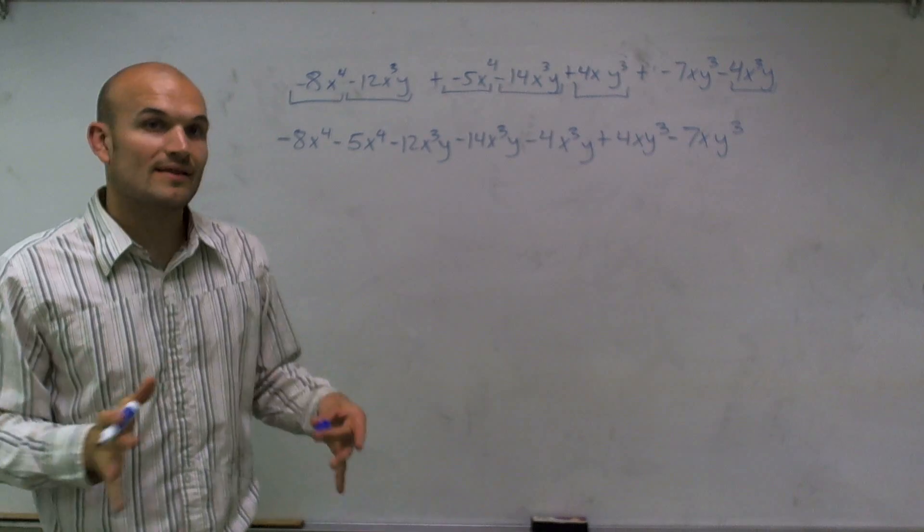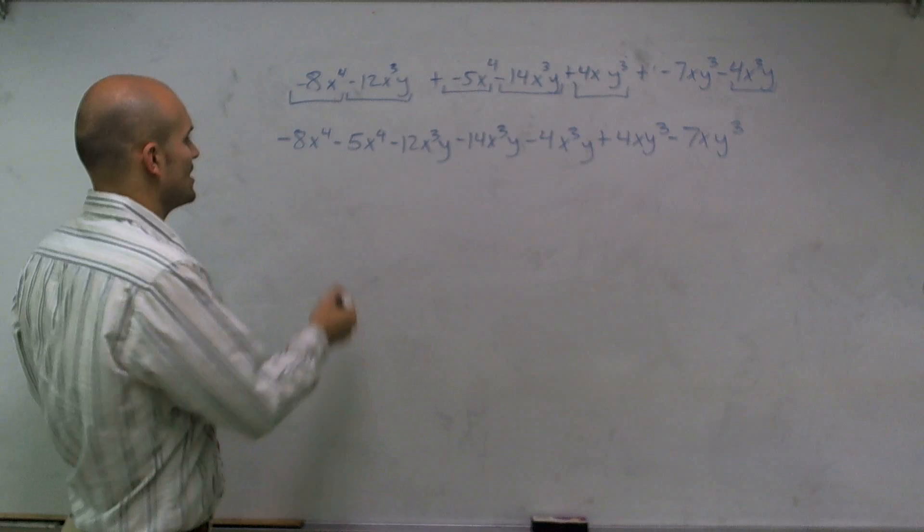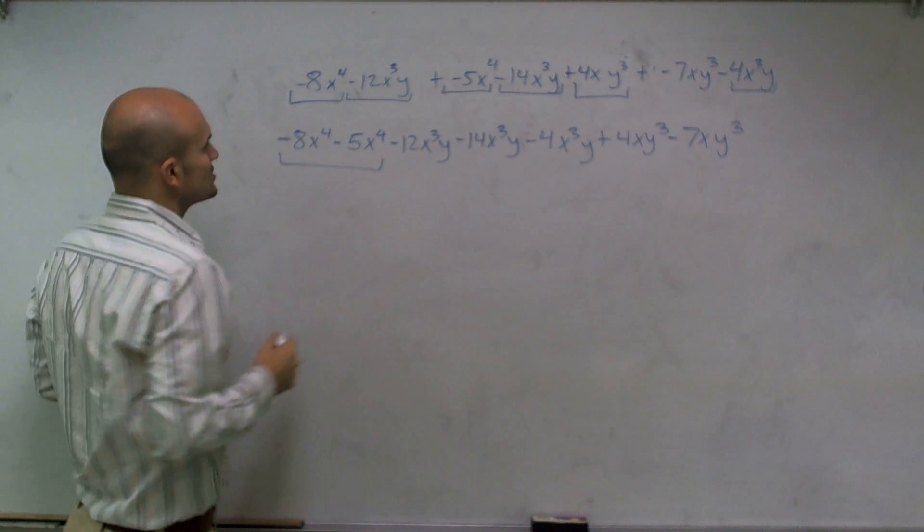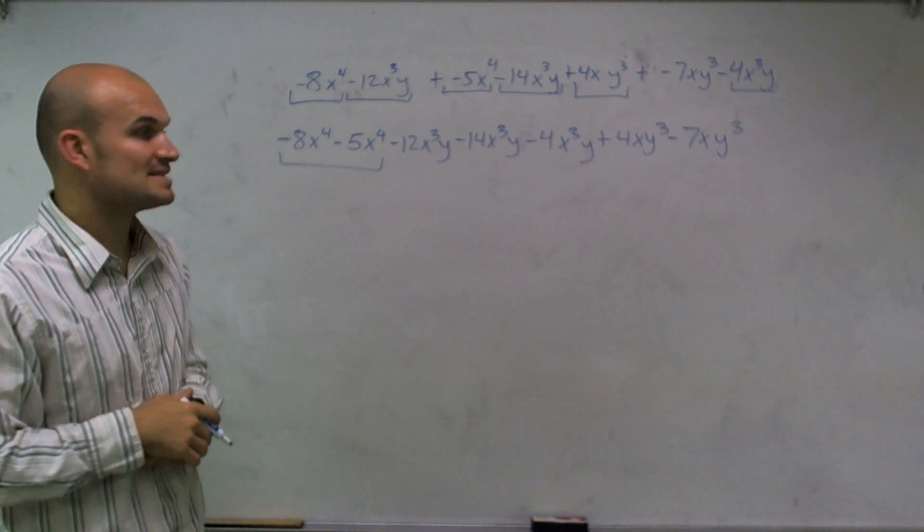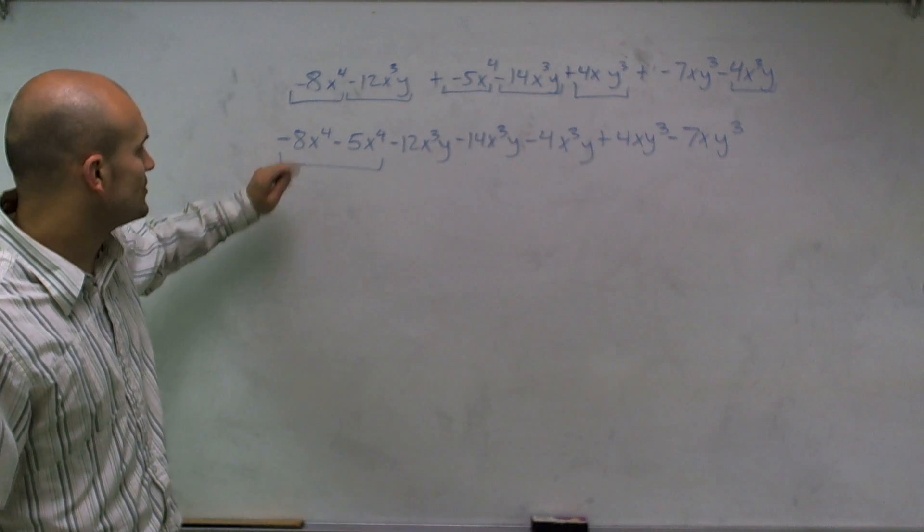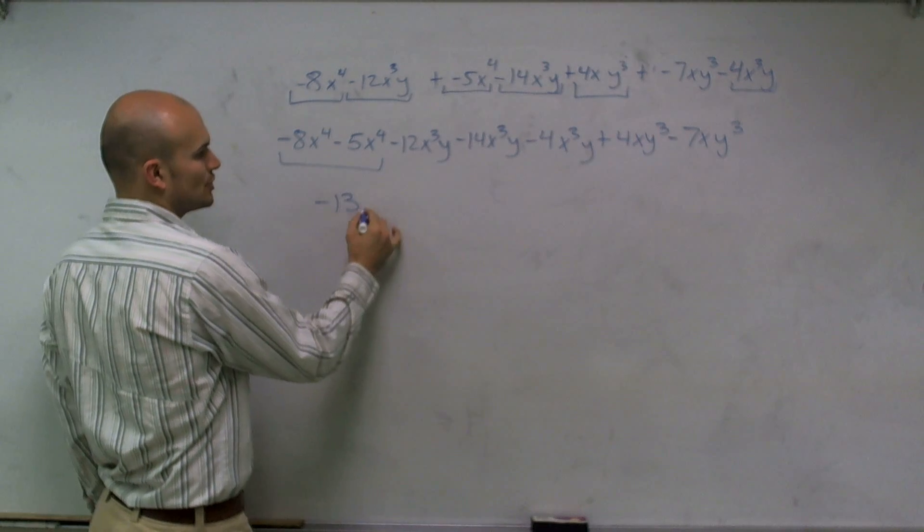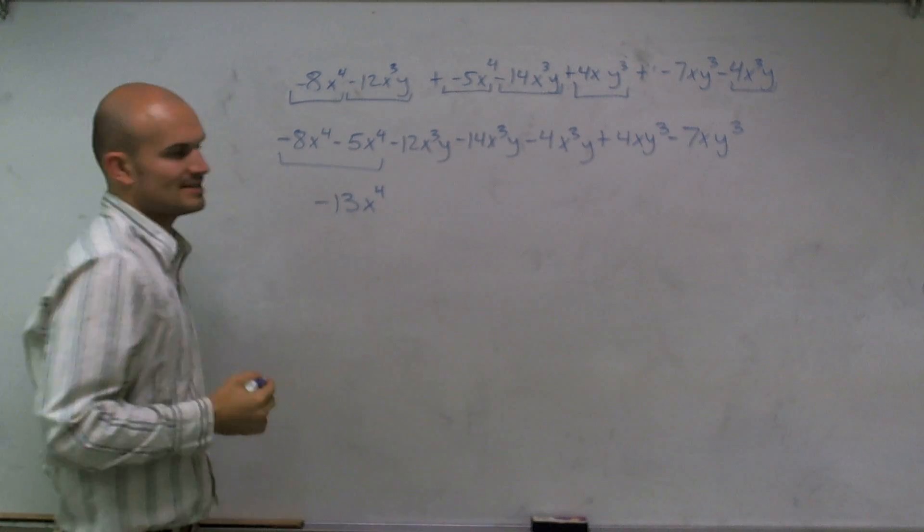So now that I have everything arranged together, now what I can simply do is just combine them as they are. So a negative 8x to the fourth minus 5x to the fourth. And you can just think of these as simple terms. You can have negative 8 minus negative 5. It's going to be a negative 13 as your term remains the same.